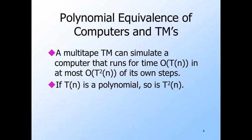The most expensive part of simulating a real computer on a Turing machine is simulating name-value storage. But if a computer runs for T(n) steps, it can't store or retrieve more than T(n) items. A Turing machine can simulate one lookup or insert in steps proportional to the tape length holding the store, which is at most T(n). Thus the Turing machine takes at most T(n)^2 steps. If T(n) is a polynomial, so is T(n)^2 — the exponent grows, but it remains polynomial. Since we are dividing problems into polynomial and non-polynomial, we can think 'Turing machine or computer, whichever is more convenient.'